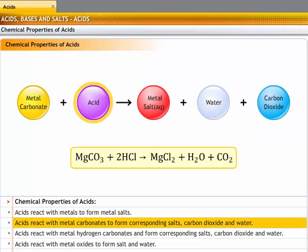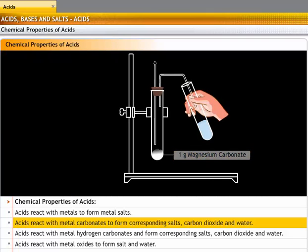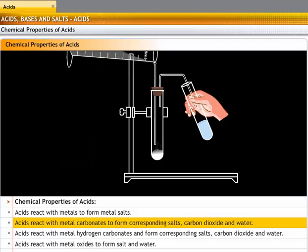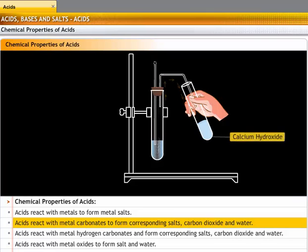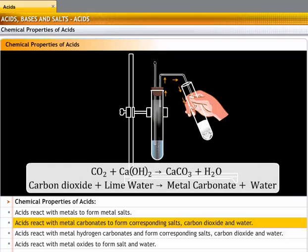Acids react with metal carbonates to form corresponding salts, carbon dioxide, and water. Try this experiment. Take 1 gram of magnesium carbonate. Now pour 2 ml of hydrochloric acid into the test tube. You will observe that a gas evolves. Pass this gas through freshly prepared calcium hydroxide solution, also known as lime water. Lime water turns milky, proving that the gas is carbon dioxide. The precipitate formed in this process is calcium carbonate.